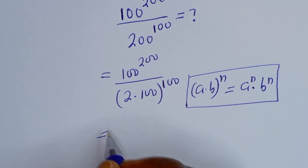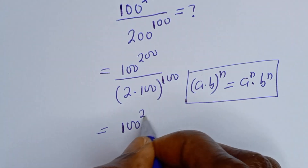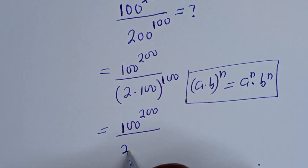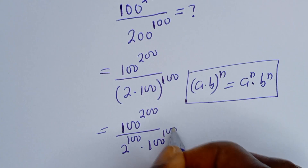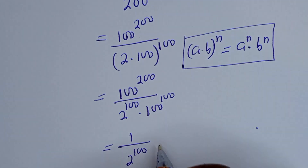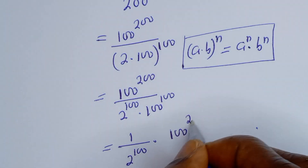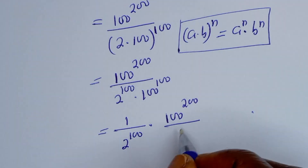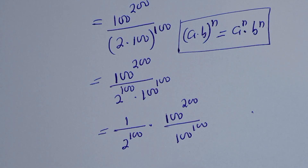Then here it is equal to 100 to the power of 200 divided by 2 to the power of 100 multiplied by 100 to the power of 100. Then this is equal to 1 over 2 to the power of 100, multiplied by 100 to the power of 200 divided by 100 to the power of 100.